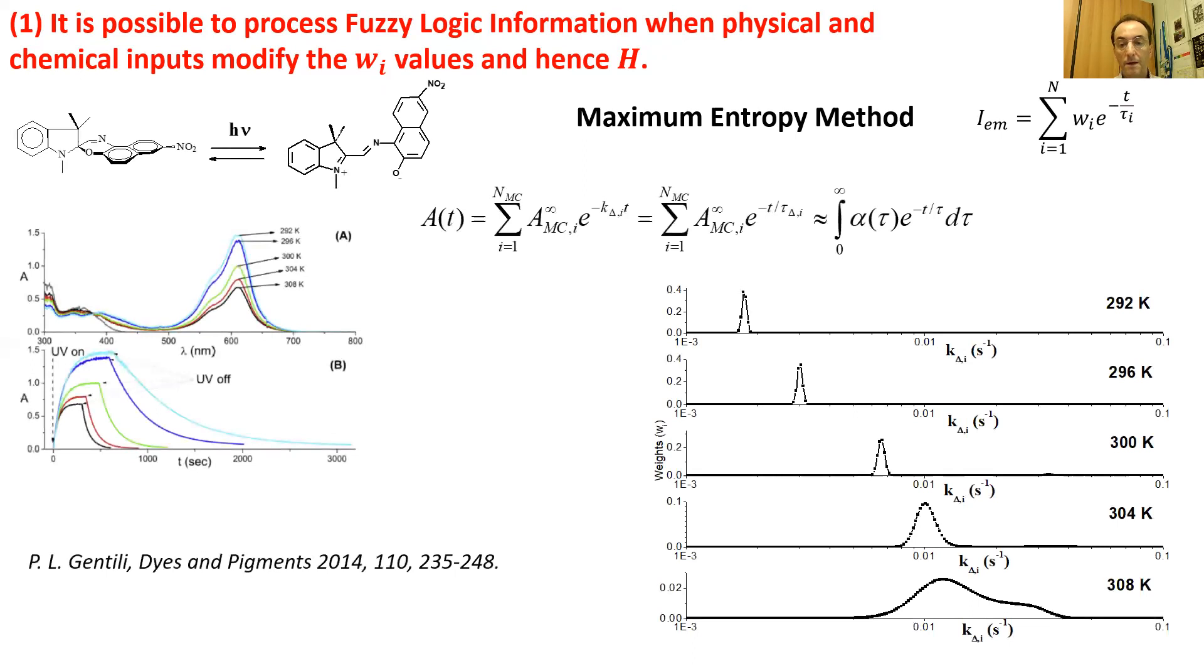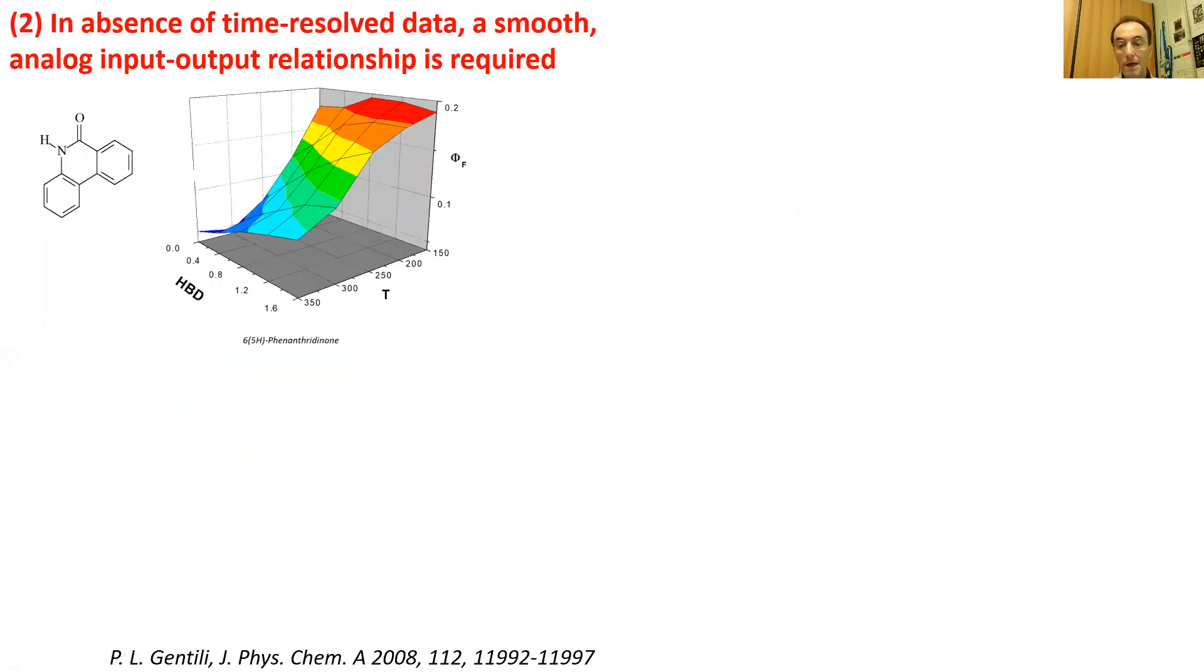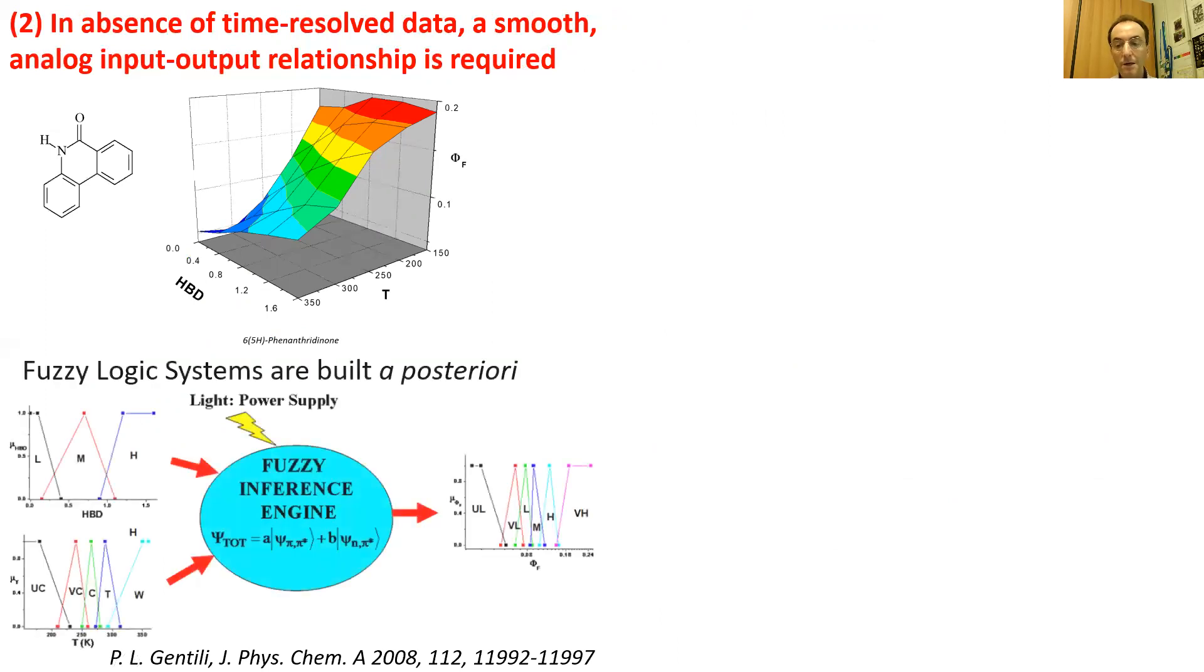I show here an example. It's a photochromic compound that becomes colored when it is irradiated, whereas it bleaches when the radiation is discontinued. The bleaching process is fitted by polyexponential functions, and here I show the distributions of kinetic constants that depend on the temperature. It's possible to process fuzzy logic even in cases we don't have time-resolved techniques. What is required is to find smooth analog input-output relationships that can be employed to implement fuzzy logic systems after the granulation and graduation of all the variables and the formulation of fuzzy rules. The granulation of the physicochemical variables can be accomplished not only a posteriori through software but also a priori by mixing proper molecular compounds and imitating the structural principle of every human sensory subsystem.